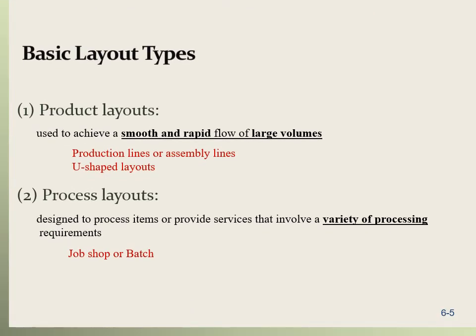Now we start to talk about different types of facility layouts. There are essentially three basic layout types — the fourth is just a combination. The first is the product layout, which is used to achieve a smooth and rapid flow of large volumes of products. Examples include production lines, assembly lines, and U-shaped layouts.